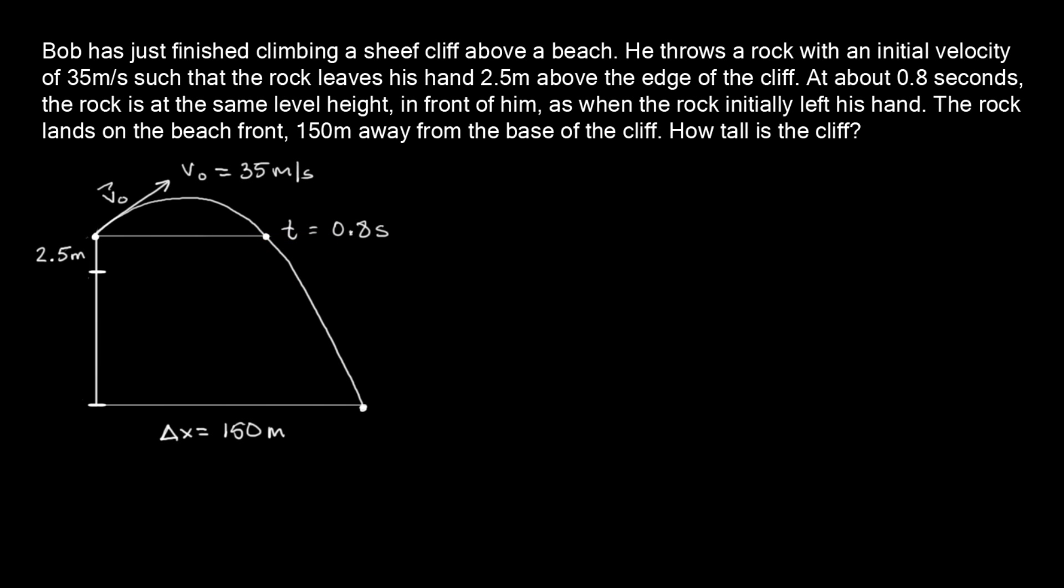Okay, and welcome back. So here we have another 2D kinematics problem, and this one involves a guy named Bob, and he just finished climbing a sheer cliff above a beach. He throws a rock with an initial velocity of 35 meters per second, such that the rock leaves his hand 2.5 meters above the edge of the cliff. At about 0.8 seconds, the rock is at the same level height in front of him as when the rock initially left his hand. The rock lands on the beachfront 150 meters away from the base of the cliff. How tall is the cliff?